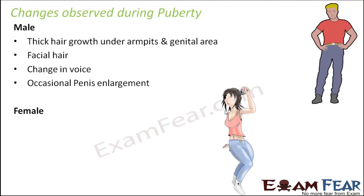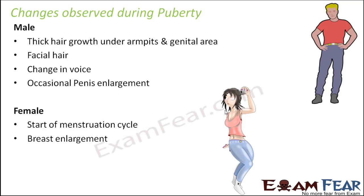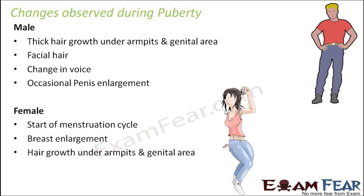Similarly, in case of females, certain changes are also seen. First, the start of the menstruation cycle — every 28 days there is bleeding through the vaginal opening. We will talk about what the menstruation cycle is as we go ahead with this lesson. This is a major change that starts in a female and signals she is entering the reproductive phase. Second, breast enlargement, which accompanies the menstruation cycle. Third, hair growth under armpits and in the genital area.